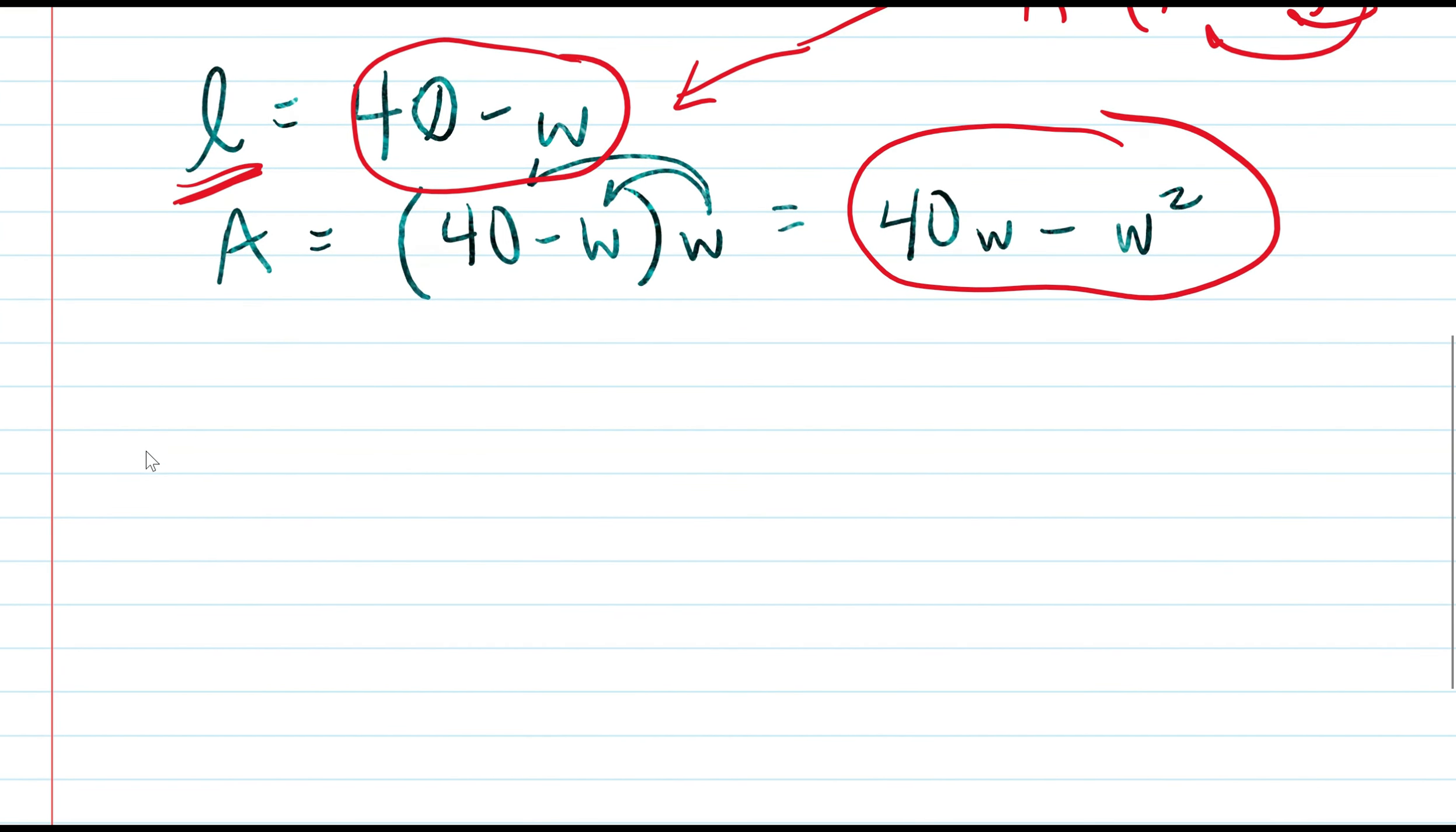Let's keep moving forward. We have area equals 40w minus w squared. Now we have to take A prime, meaning take the derivative. The derivative, as you recall from your derivative notes, of 40w is just 40. The derivative of w squared is 2w.